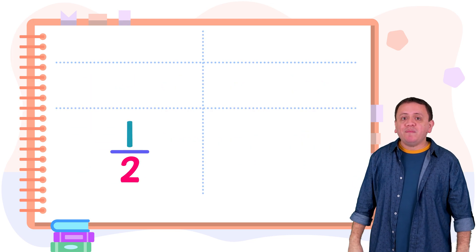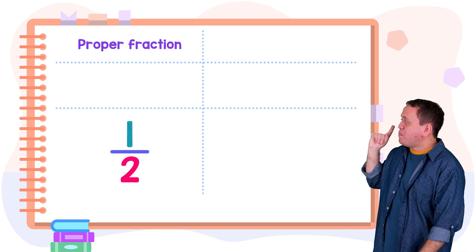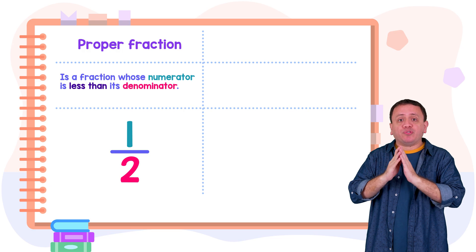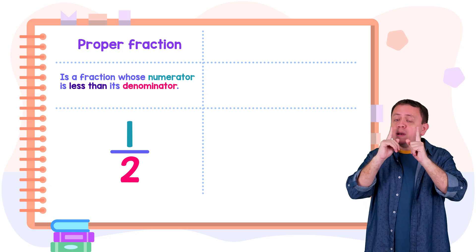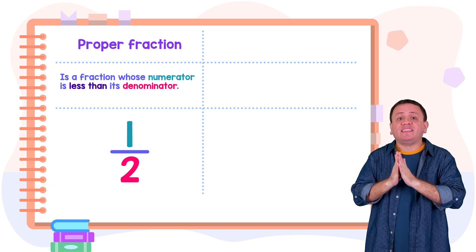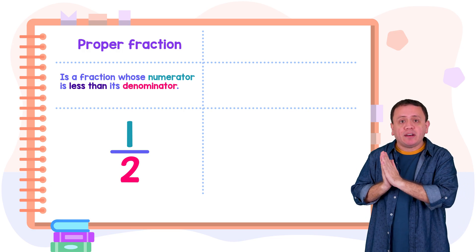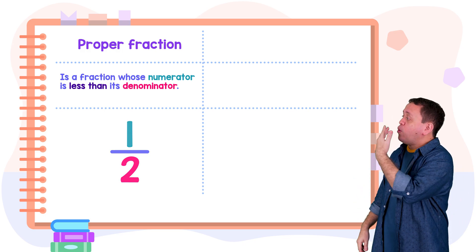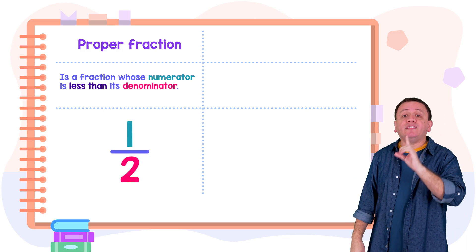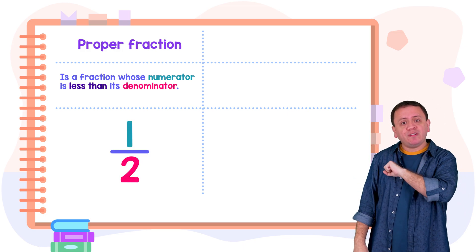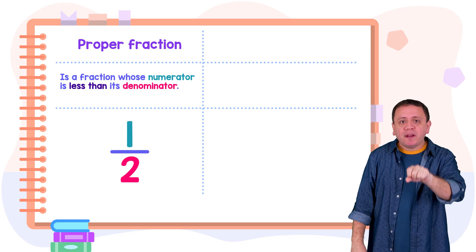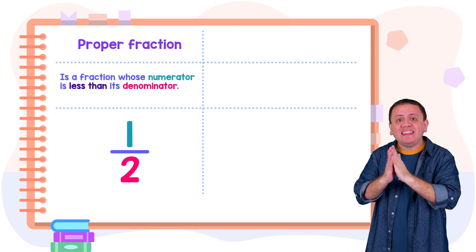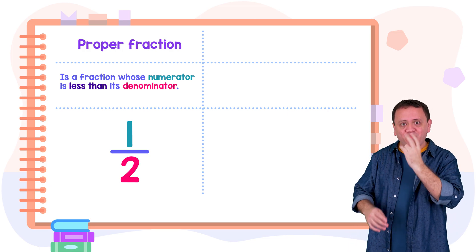In a previous lesson, we studied the proper fraction. A proper fraction is one whose numerator — the top number — is less than its denominator, the bottom number. For example, the fraction one half is a proper fraction because the numerator one is less than the denominator two.